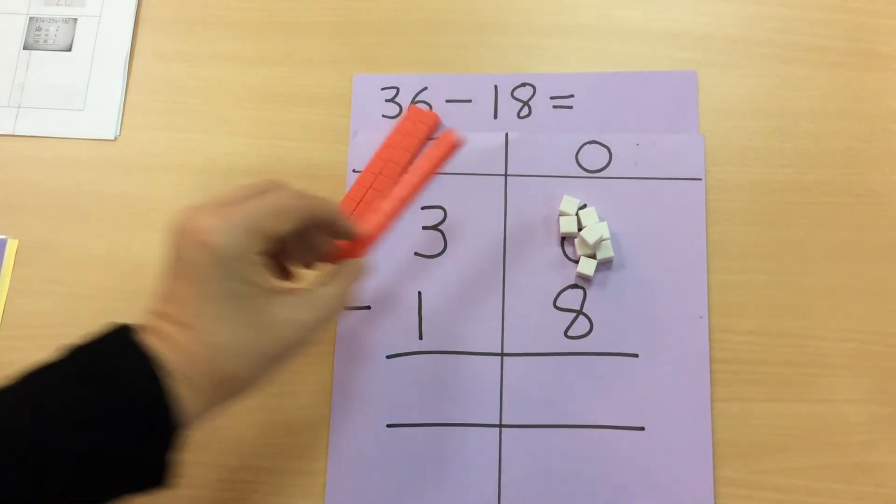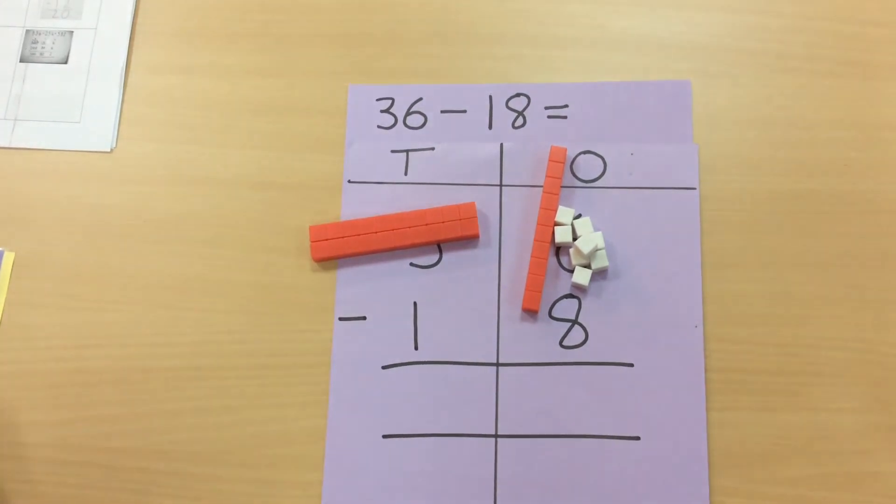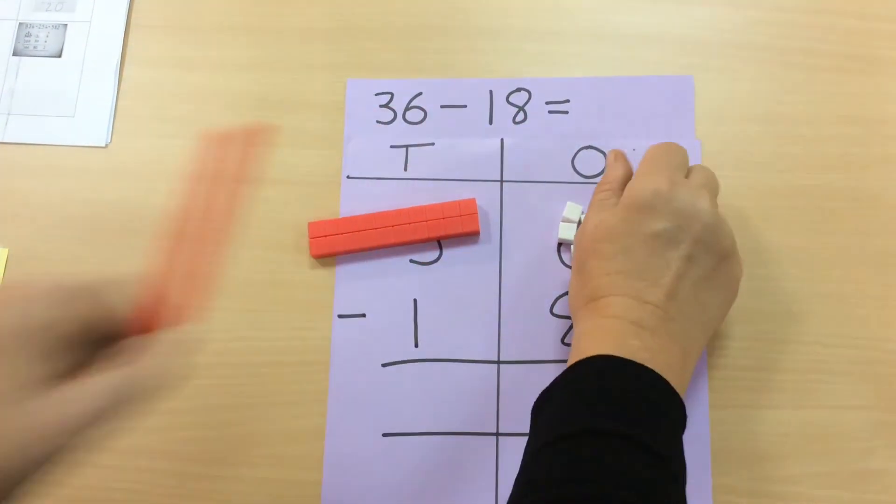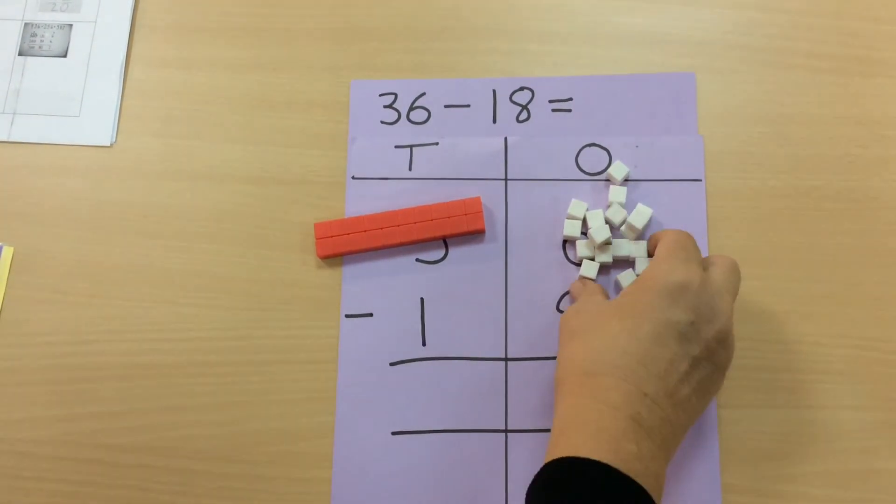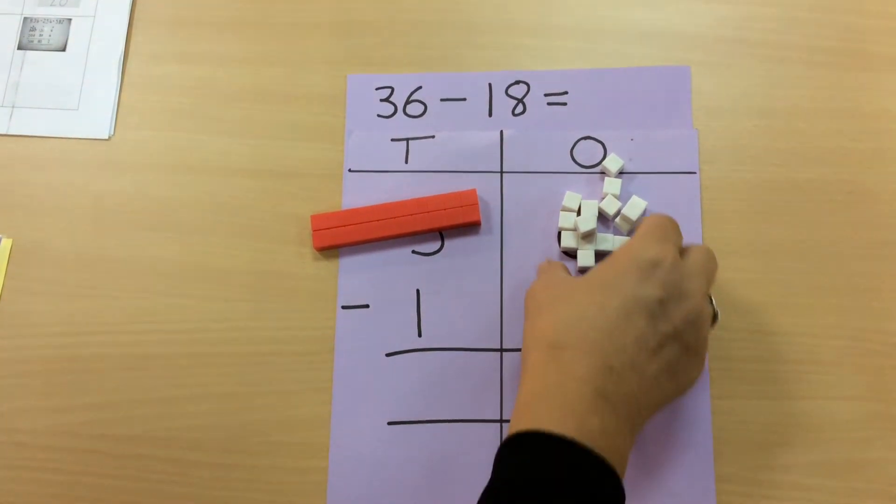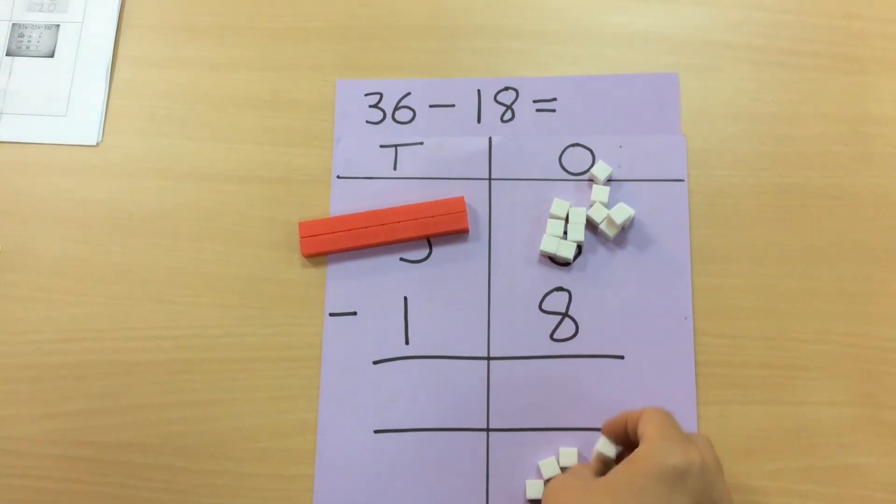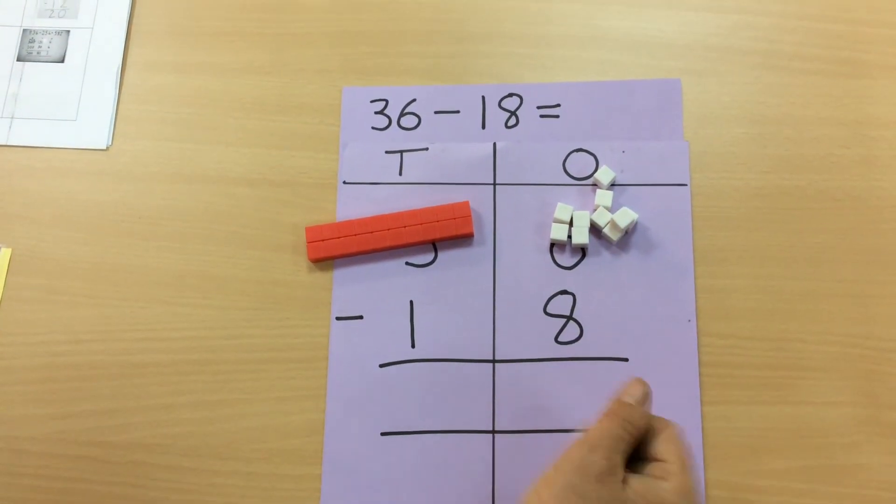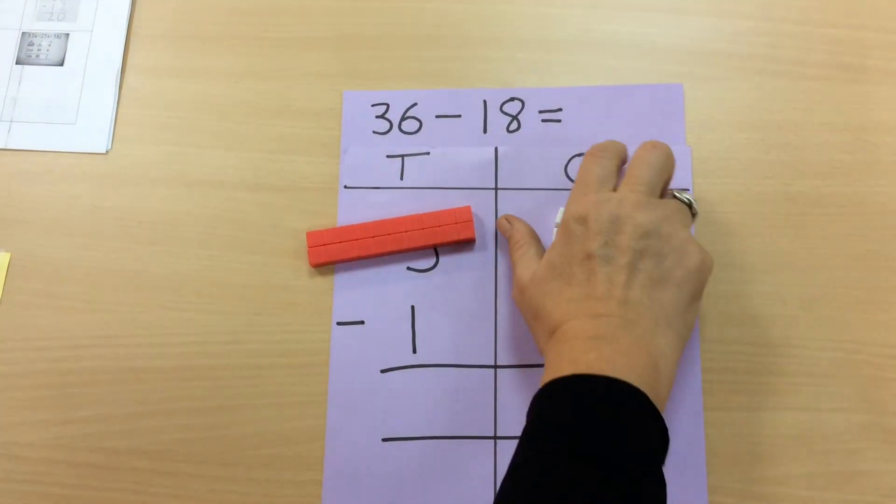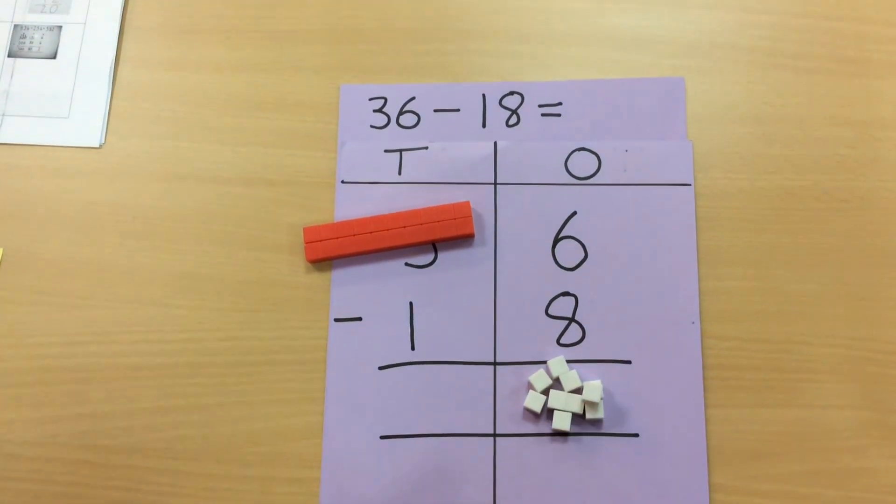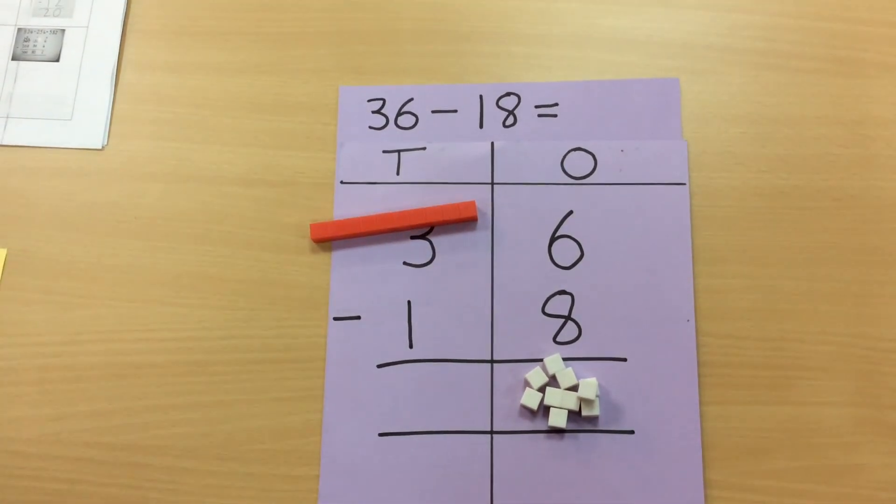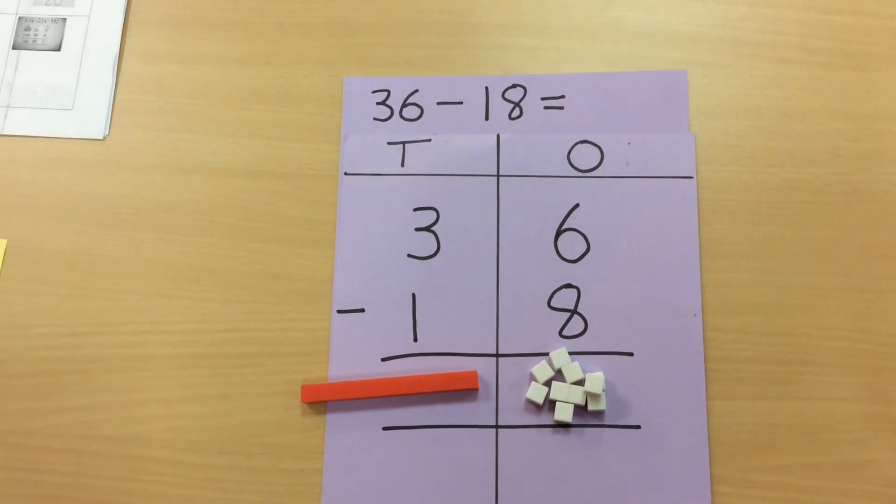So carrying on, it's still a case of exchanging or borrowing, swapping them over, taking them away, swapping them over, taking those ones away, putting these ones down into the equals, taking away the one ten into the equals.